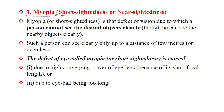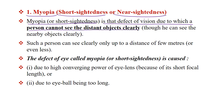Myopia, or short-sightedness, is that defect of vision due to which a person cannot see distant objects clearly. However, they can see nearby objects clearly. Myopia is also known as short-sightedness or near-sightedness.